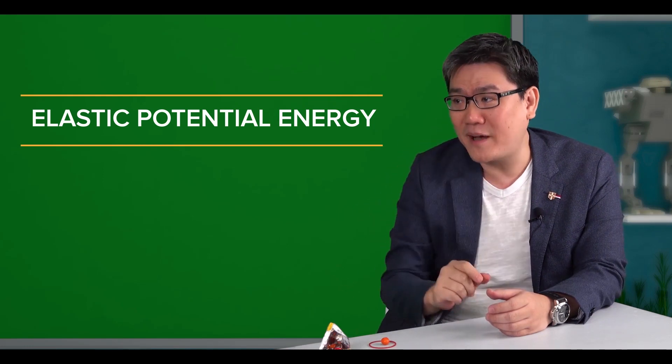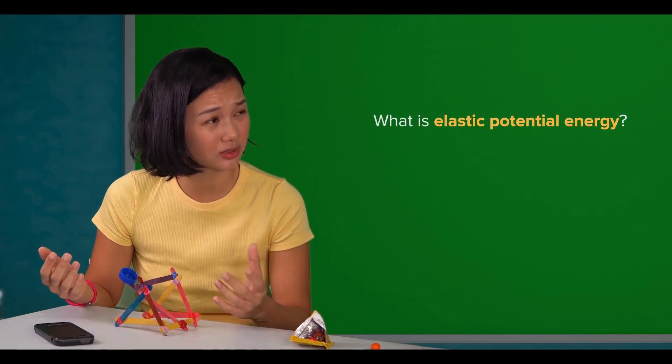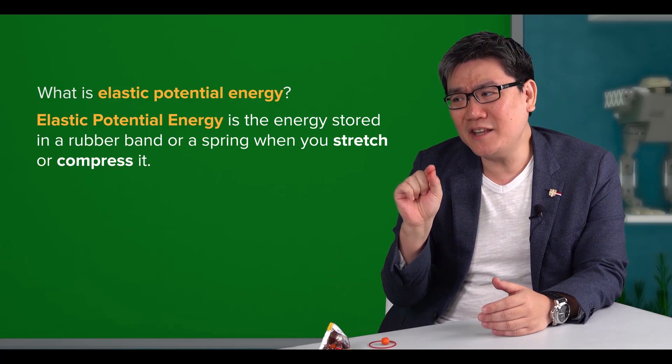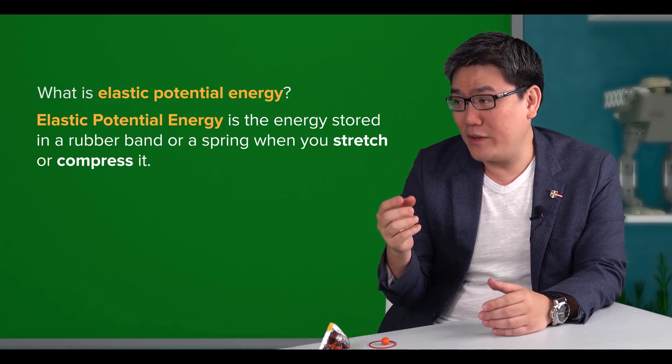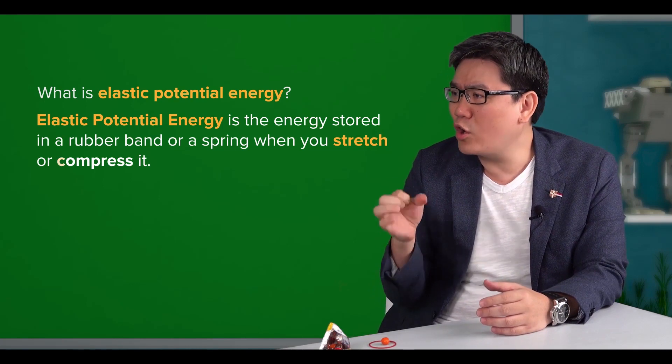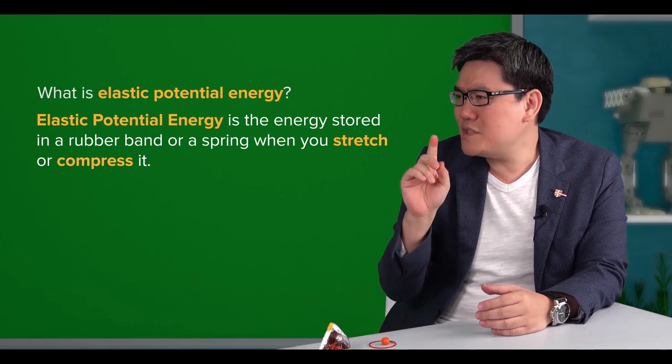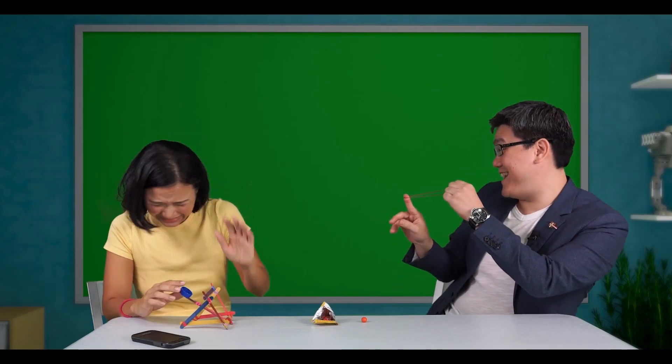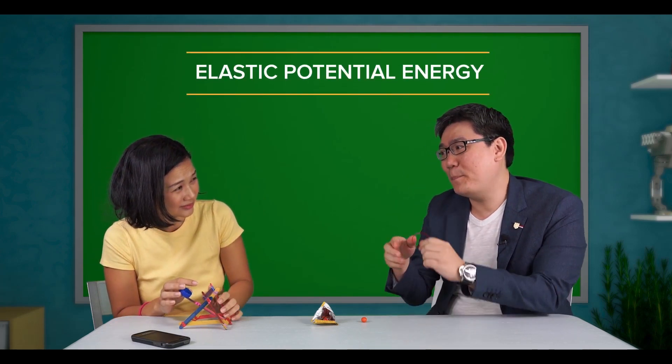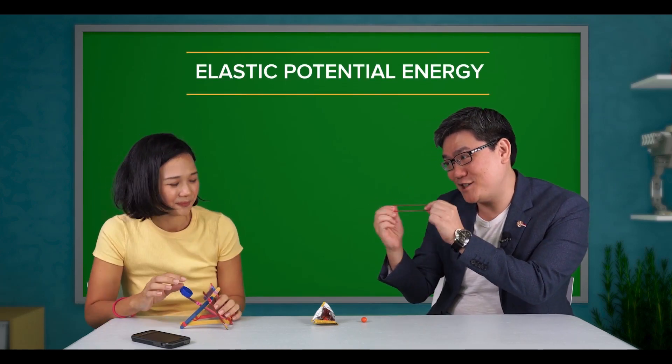What is elastic potential energy? Well, it is the energy stored in a rubber band or a spring when you stretch or compress it. When you take a rubber band and stretch it and shoot it at a friend, that is elastic potential energy.